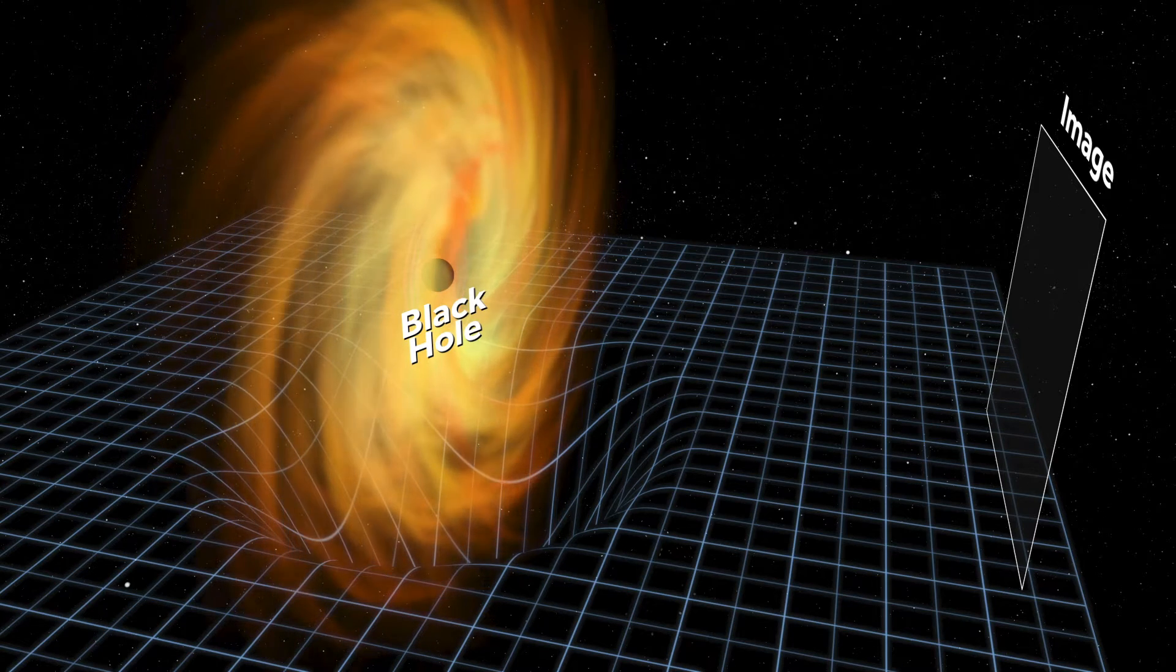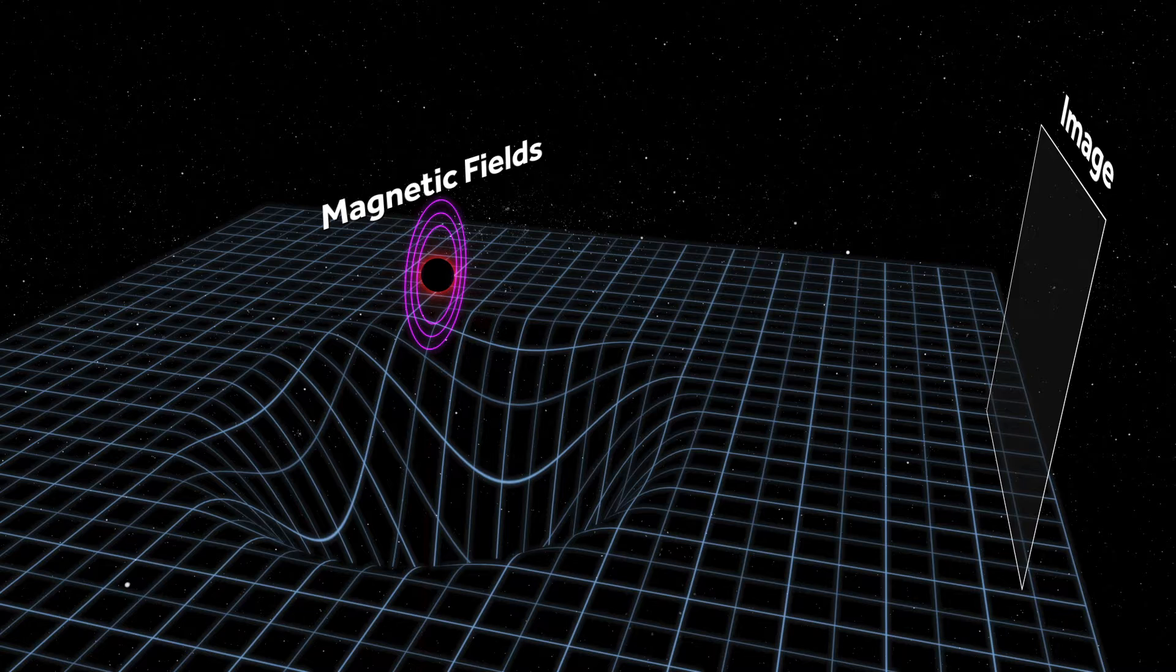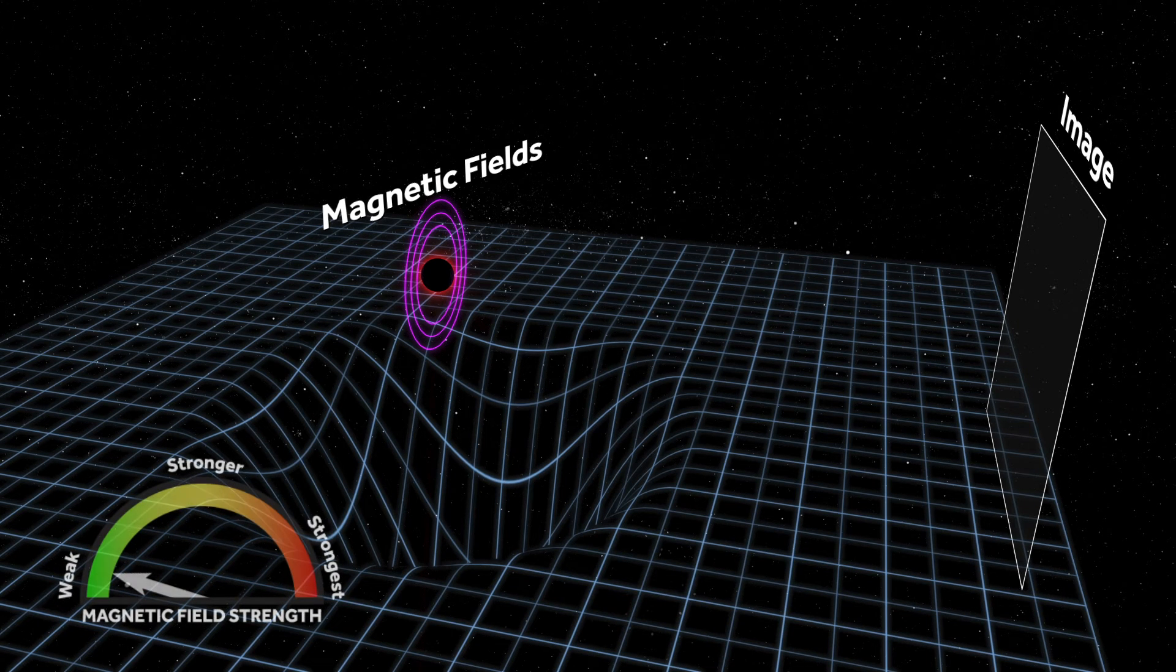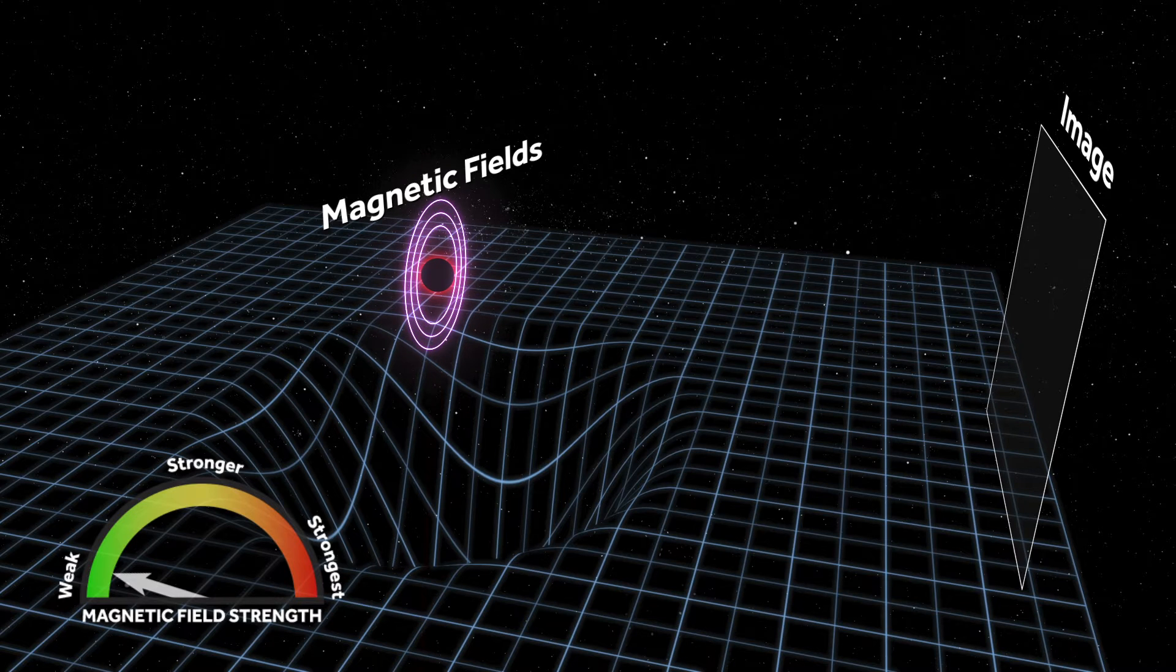The plasma swirling around a black hole has magnetic fields threaded throughout. If the magnetic fields are weak, the plasma drags them into a circular pattern.